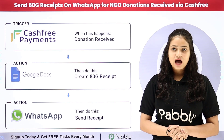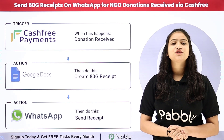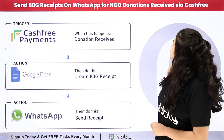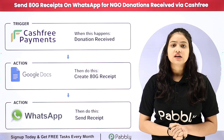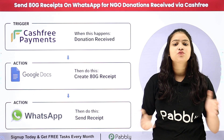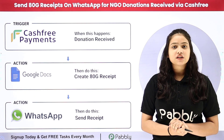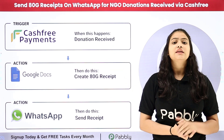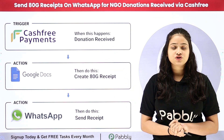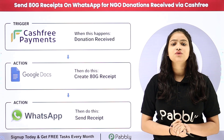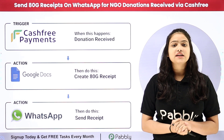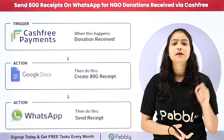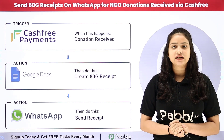Hello everyone, welcome back to Pabbly. In this video, we are going to learn how to send ATG receipts on WhatsApp for NGO donations received via Cashfree. I am running an NGO with the name Humanity Across Borders, and my objective is that whenever I receive a donation via Cashfree payments, an ATG certificate should be created for the donor and sent over WhatsApp. For sending WhatsApp messages, I am going to use AISENSY to send a template message along with the ATG certificate.